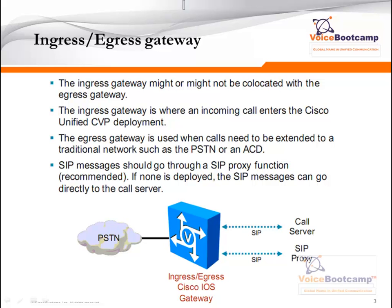SIP messages should go through a SIP proxy function — that is recommended. If none is deployed, then SIP messages can go directly to the call server. So you have a choice: sending calls from the Ingress Gateway to a SIP proxy — which could be a presence server, a SIP proxy device, or a third-party SIP proxy — and then from there it goes to the call server, or you can send calls directly to the CVP call server components.